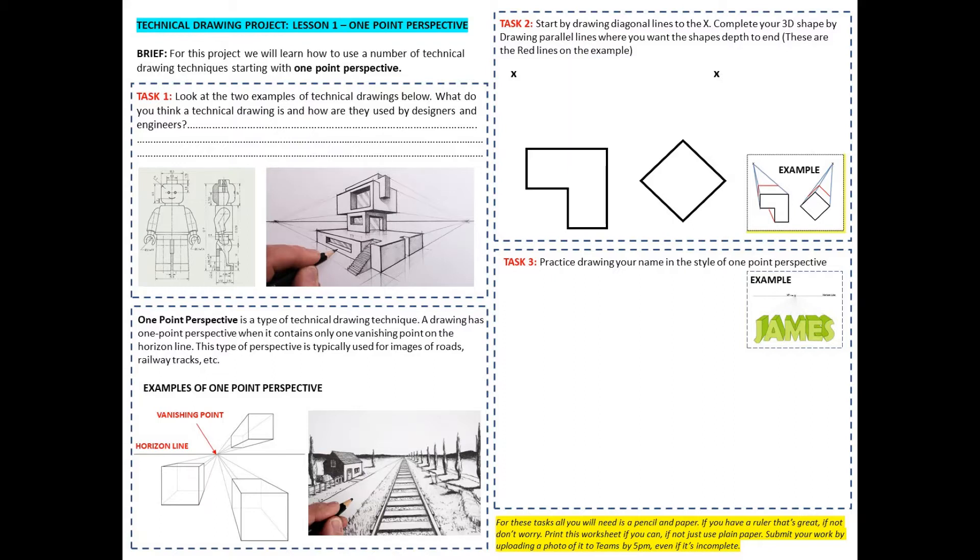Talking a little bit more about the horizon line, if you look at the example there, that horizontal line that I've labeled, that is the horizon line. So if you think back to perhaps when you've been at the beach, if you look out over the ocean, the point where the sky meets the ocean, that is known as the horizon line. On my horizon line, in this example, I've got one vanishing point and as you can see this is the point which my 3D cubes go towards.